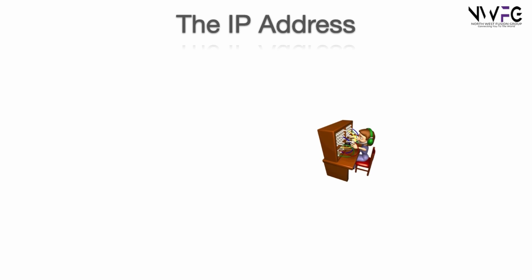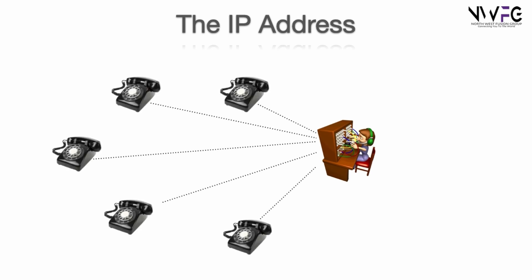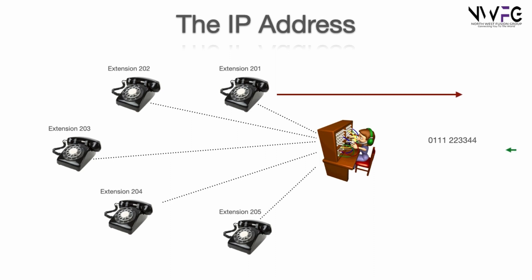So here we have a switchboard, which is manually controlled by a receptionist. There are two types of number in use: an external number that people can call, and internal numbers or extensions that the call can be put through to. The extensions can make calls out, but any incoming calls have to be dealt with by the receptionist and routed to the relevant extension. The beauty of this system is that the internal numbers can be used by other switchboards because calls cannot be connected directly, so every switchboard can have the same numbering scheme for its extensions.